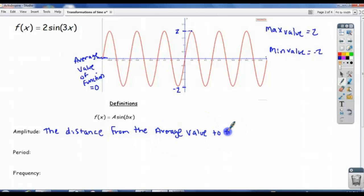Because y equals 0 is the equation of this line, the distance from the average value to the maximum value - it's also the distance to the minimum value as well. It's the same because of the symmetry of this graph. It goes up as high as it goes down below.